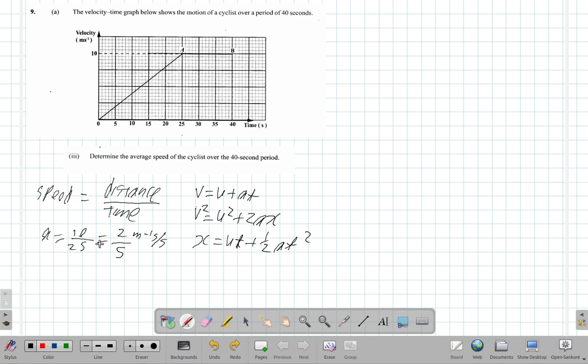Now let's see if we can find out the distance traveled in the first 25 seconds. The distance x = ut + 1/2 at². Since initial velocity u is zero, x = 1/2 × 2/5 × 25². So that's 1/5 times 625, which gives you 125. So in the first part of the journey, the cyclist would have traveled 125 meters.